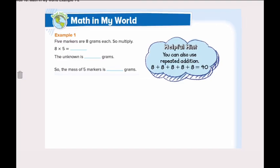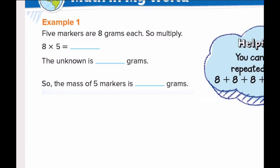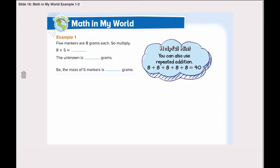So let's find. 5 markers are 8 grams each, so we will multiply. 8 multiplied by 5 is? Yes, it's 40.